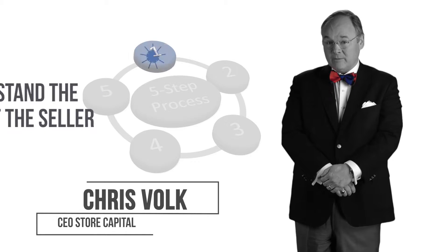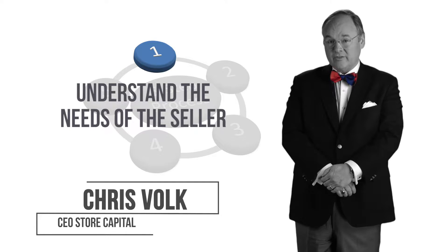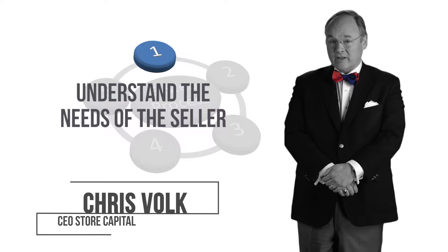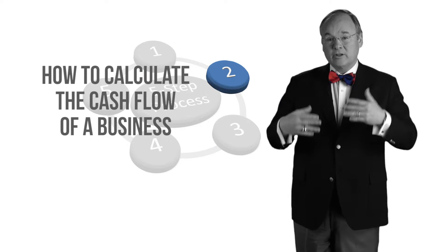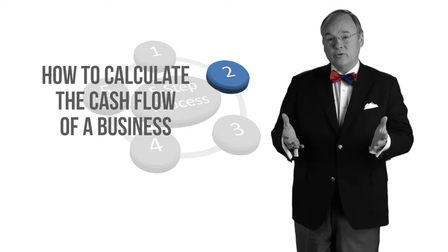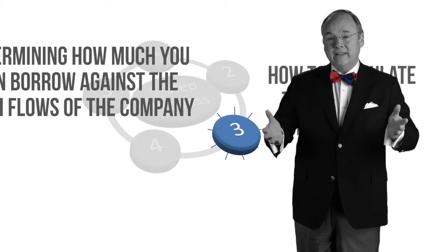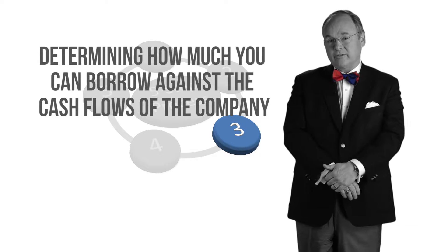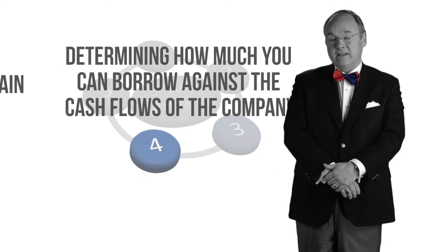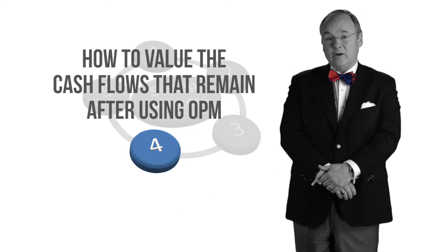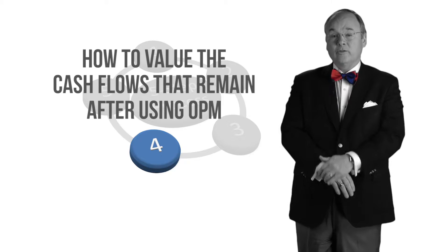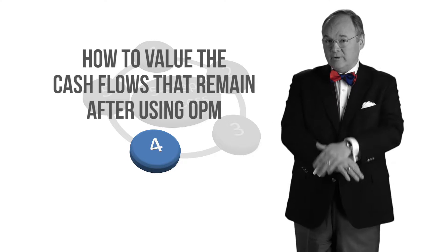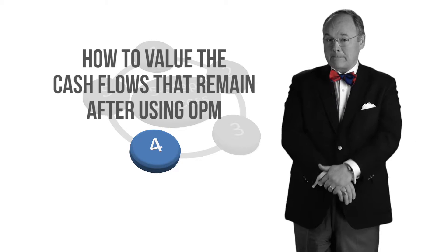In the first three segments of this lesson, we discussed the importance of understanding the needs of the seller, how to calculate the cash flow of the company that you intend to purchase, and then determine how much you can borrow against the business you'd like to purchase. Now we're on to Step 4, which is how to value the cash flows that remain after using OPM, or other people's money.